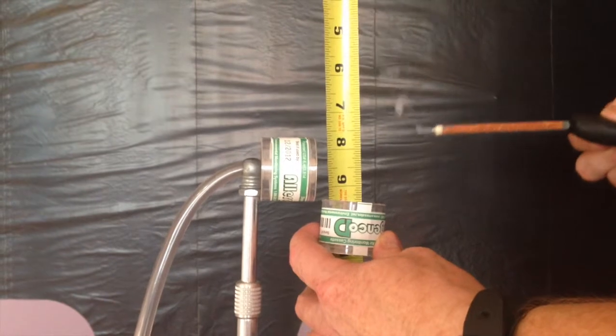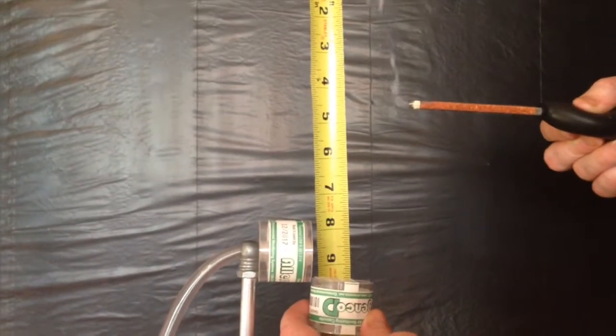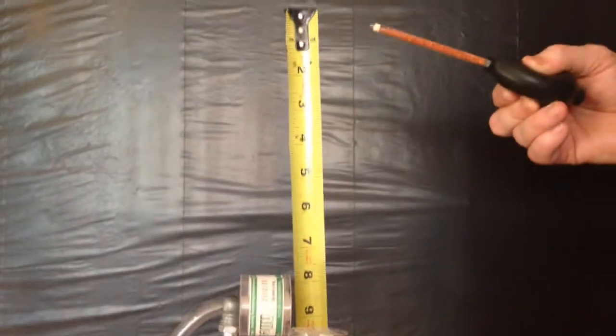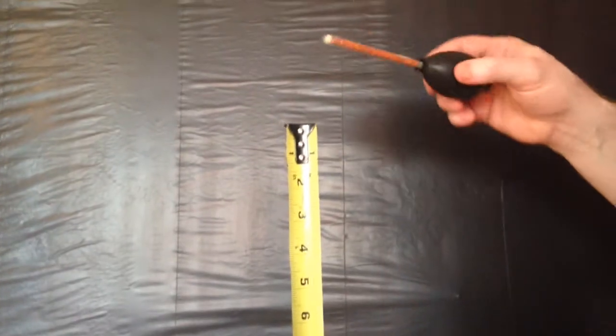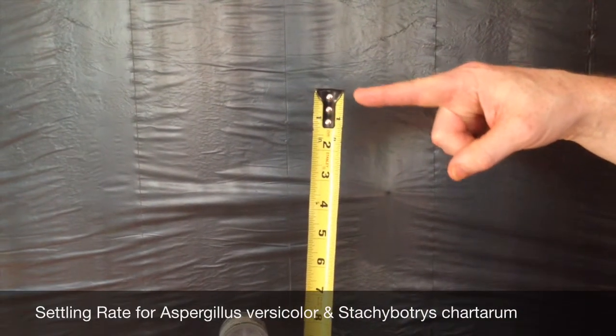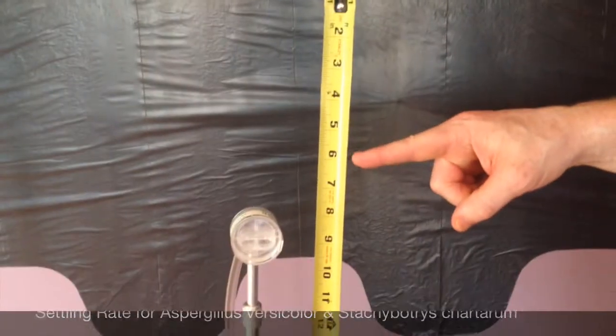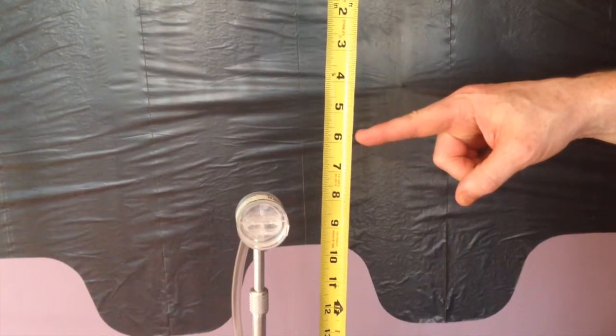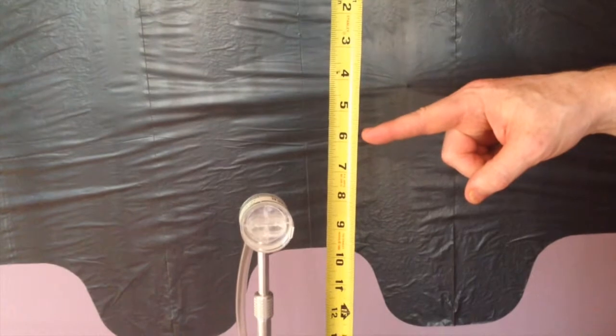The Stachybotrys chartarum conidia would settle from this location in five minutes. The Aspergillus versicolor conidia would settle from this location in five minutes. The average spore trap air sample lasts five minutes.